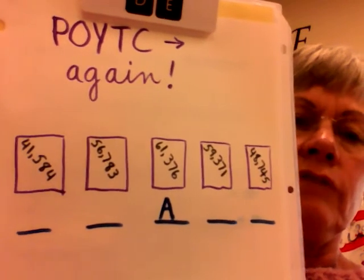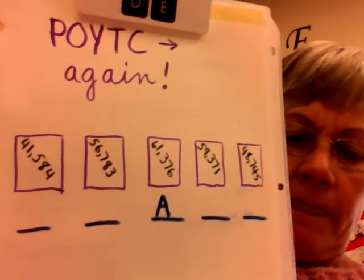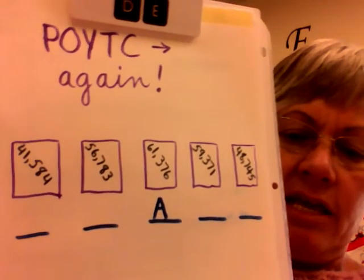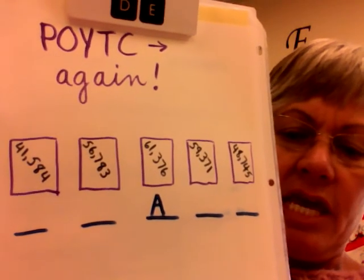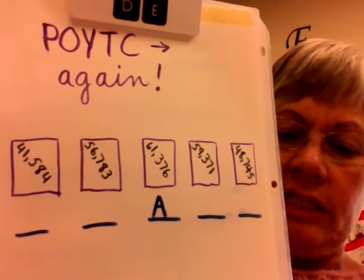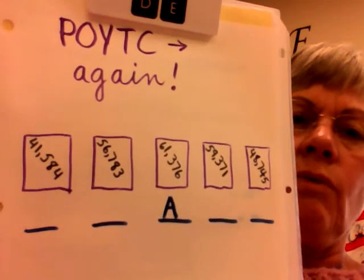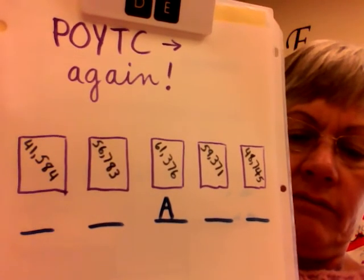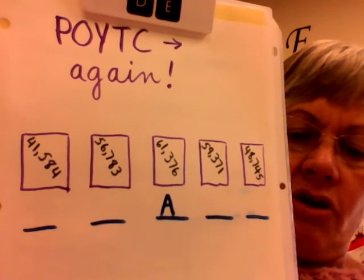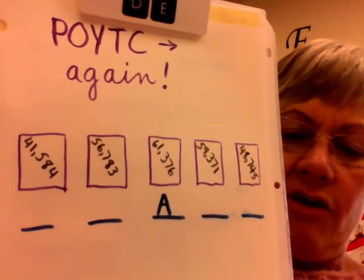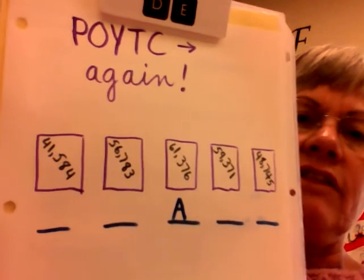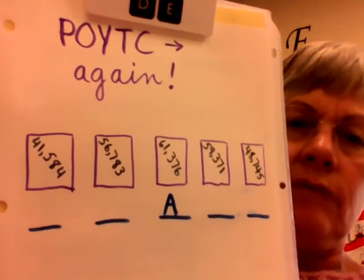Clue number three. The numbers on card C and card B have a difference of 7,161. The numbers on card C and card B have a difference of 7,161.